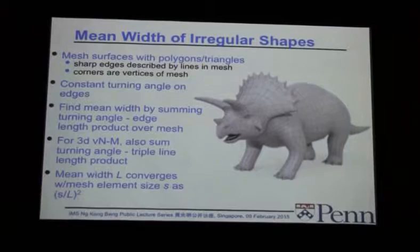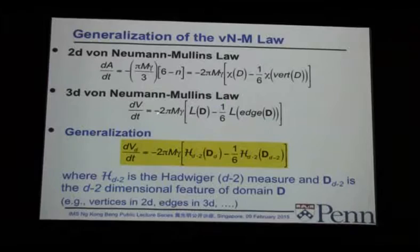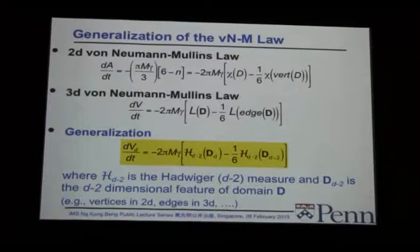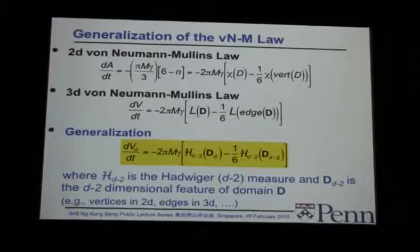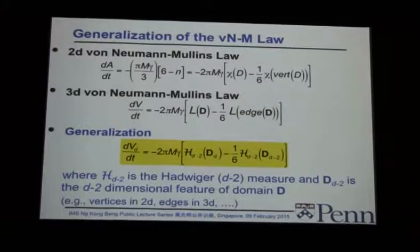The key point about convergence is that you can show the von Neumann result in two dimensions and the three-dimensional extension both work in all dimensions. The von Neumann result from 1952, which we didn't extend until 2007 — more than 50 years later — actually works in all dimensions. So if you want to know how bubbles evolve in seven dimensions, no problem.